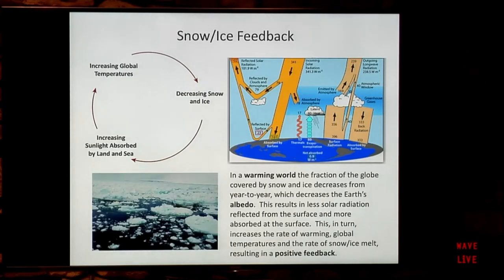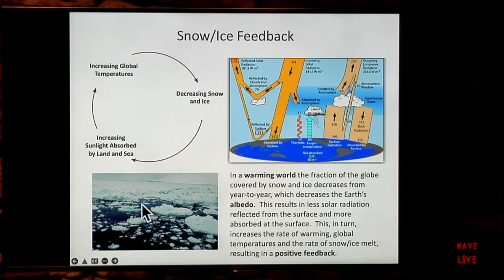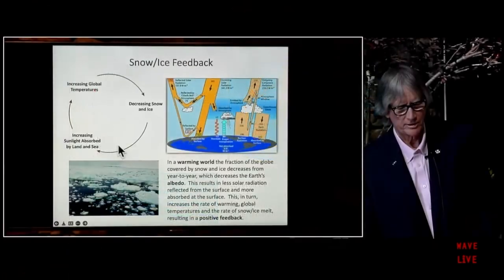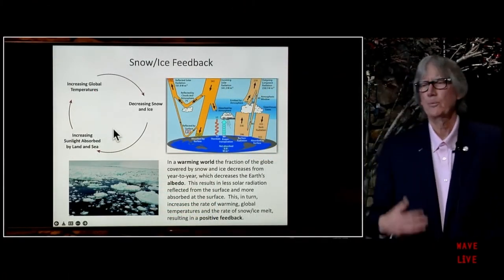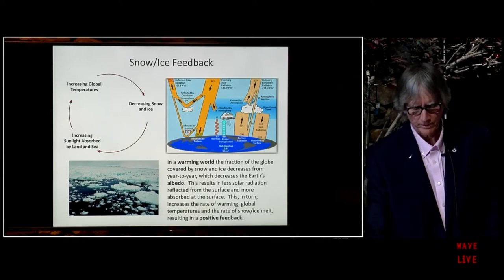The second particularly important positive feedback is the snow-ice feedback effect. Ice and snow — particularly sea ice — have very high albedo and reflect sun rays away. But when that ice melts, it leaves behind a dark ocean that increases the amount of solar radiation absorbed. Increasing global temperatures decrease snow and ice, which increases the amount of sunlight absorbed by land and sea, which further increases global temperatures. You go around this feedback loop and it amplifies the warming.